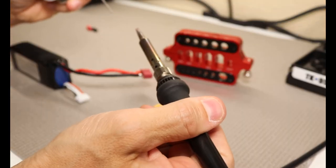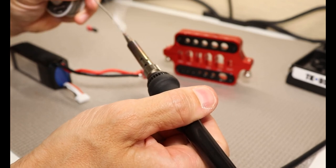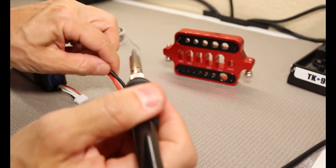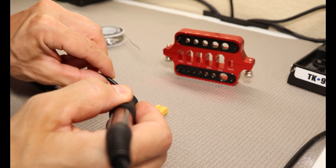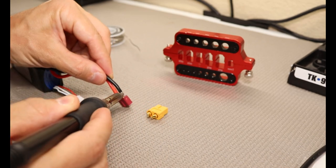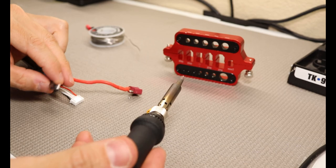Take our soldering iron. Always want to make sure you tin your iron. This is, we're starting with a clean iron here. Let's see if you guys can see that. We got one wire off.